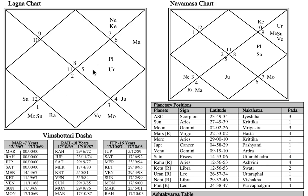Now let us analyze the lord of the tenth house. The tenth lord is the Sun, which is again sitting in the sixth house — a difficult placement for marriage. Where is the nakshatra lord of the Sun? The Sun is in Aries, exalted, in Mooltrikon, in Kritika nakshatra. The lord of Kritika nakshatra is the Sun itself — so the Sun is its own nakshatra lord. At the nakshatra level also, this position is becoming very very challenging for his married life.